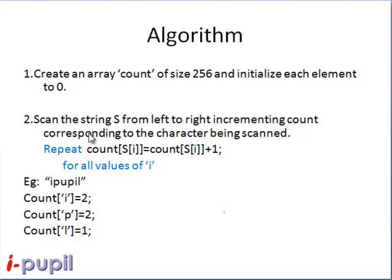Next, we start scanning the string s from left to right, incrementing count corresponding to the character being scanned. Count of s[i] equals count of s[i] plus 1. S[i] is the character that we are currently scanning at index i. Since the character has been encountered, we increment the count of that character.